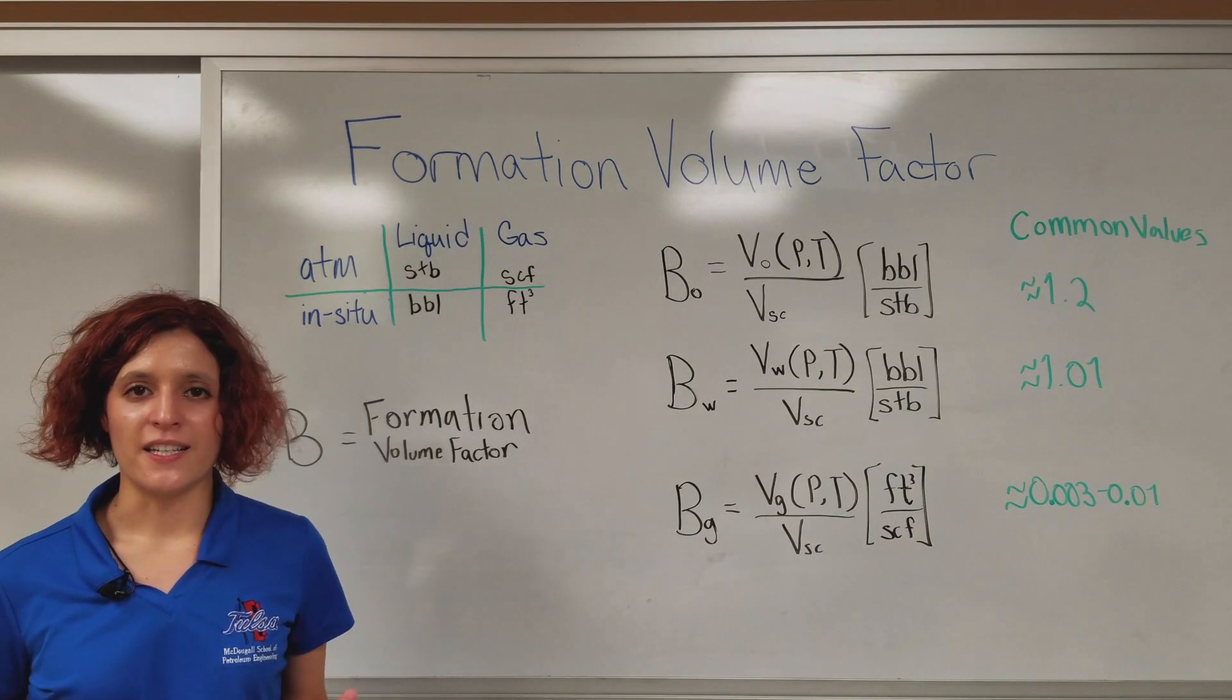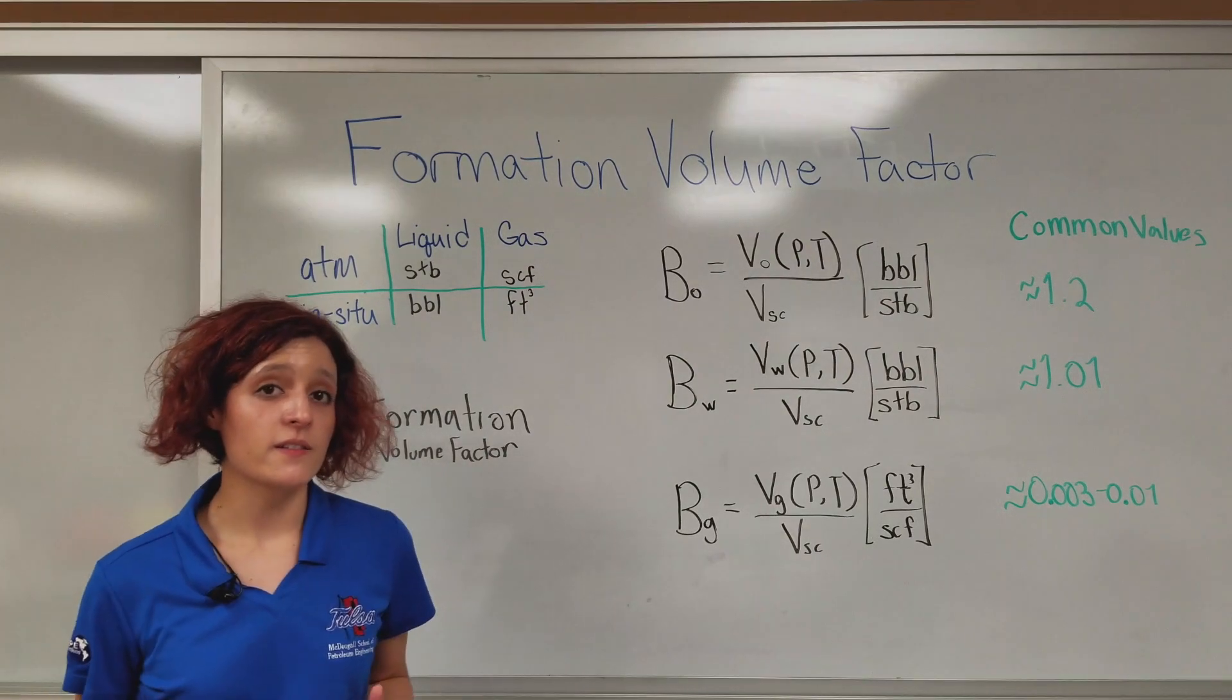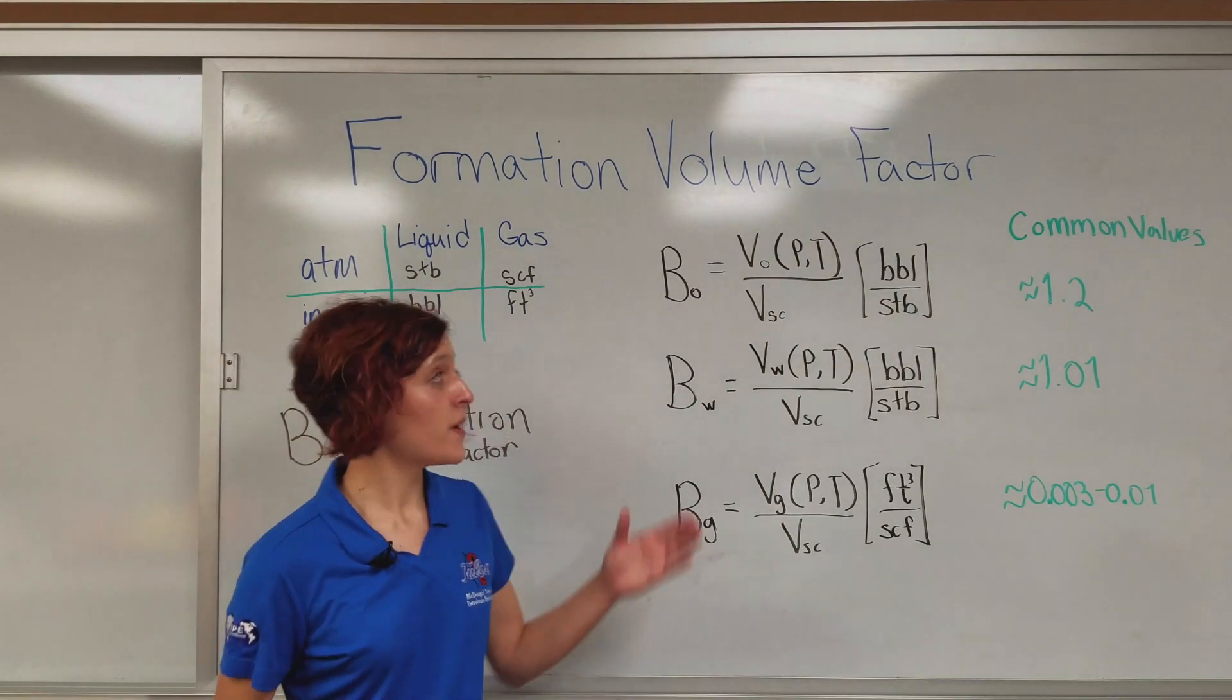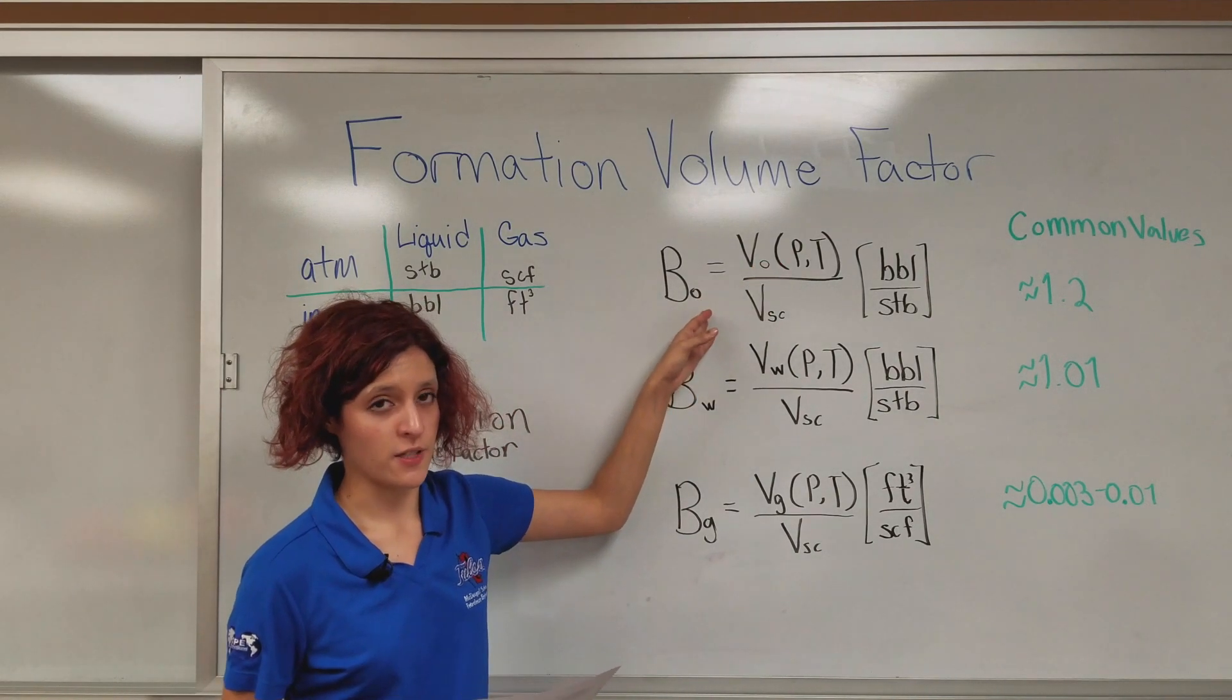Formation volume factor is signified by the letter B. And all that is, is just referring to the volume occupied at a certain pressure and temperature over its volume at standard conditions.